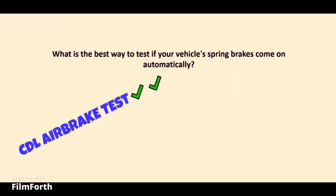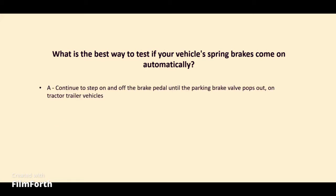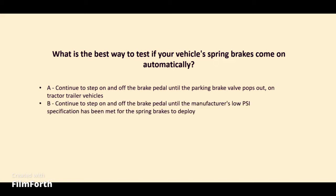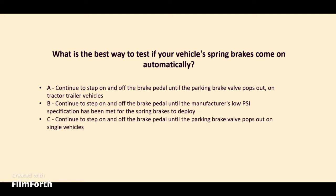The best way to test if your vehicle's spring brakes come on automatically: A. Continue to step on and off the brake pedal until the parking brake valve pops out on tractor-trailer vehicles. B. Continue to step on and off the brake pedal until the manufacturer's low PSI specification has been met for the spring brakes to deploy. C. Continue to step on and off the brake pedal until the parking brake valve pops out on single vehicles. D. All of the above. The answer: D. All of the above.